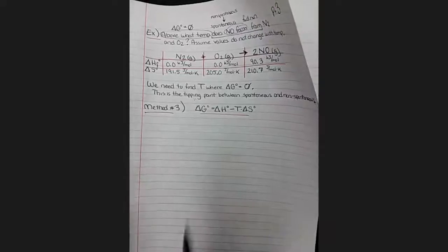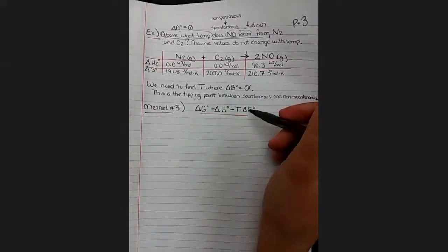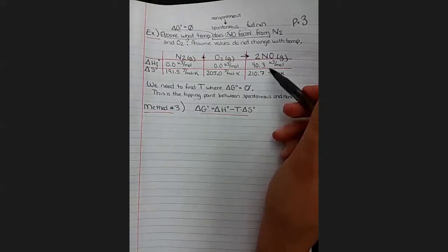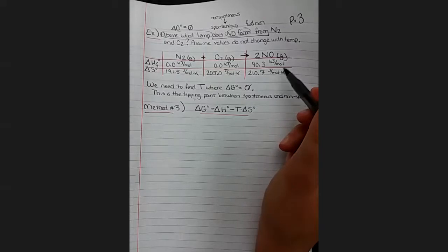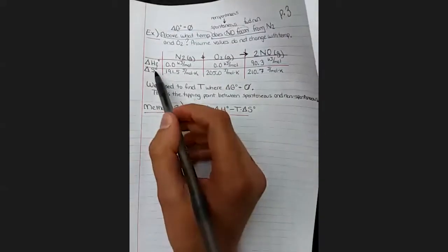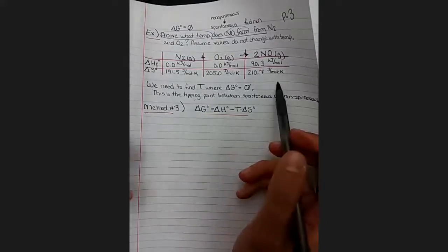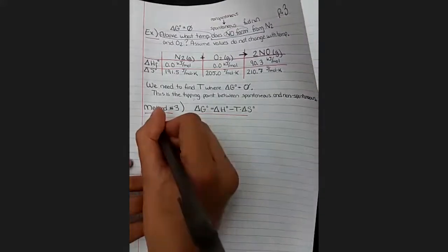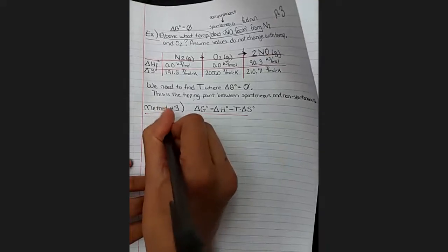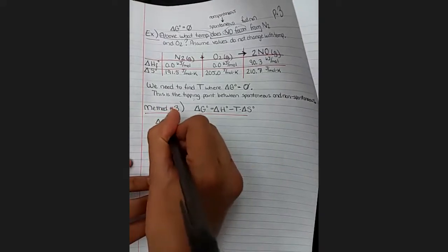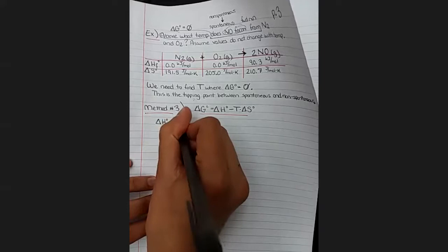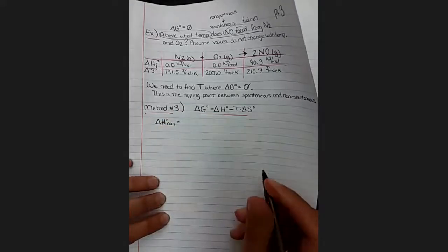So you'll notice from my digging into the reference tables that we do have lots of values for delta H and delta S, but which one of these do we use? We have a whole bunch of them. So remember how we talked about how each state function, the total can be found with products minus reactants, but we are finally going to get to put that into practice. So we are going to need to solve for the total for delta H and delta S separately first, and then we can use our favorite formula.